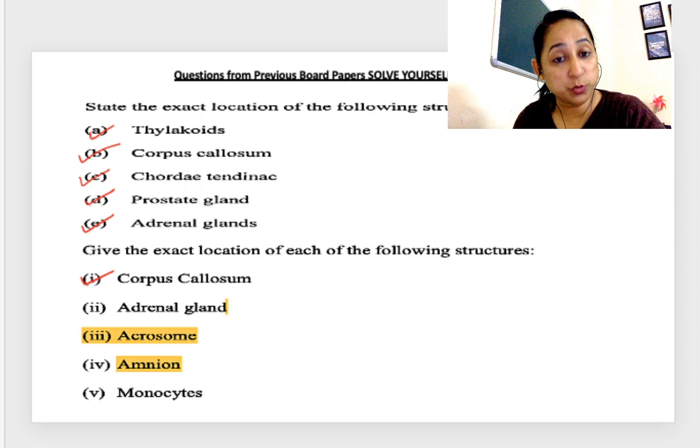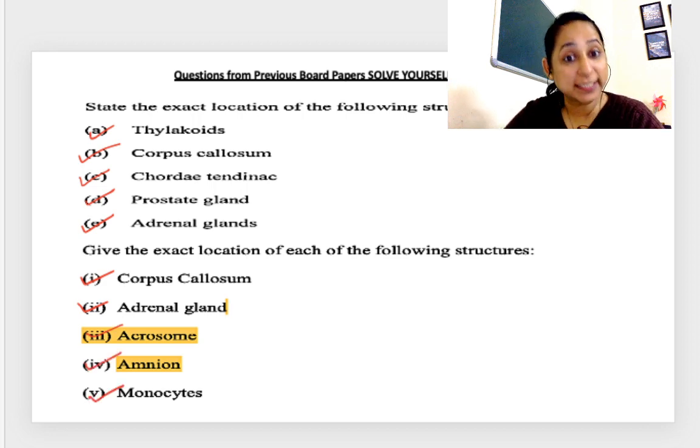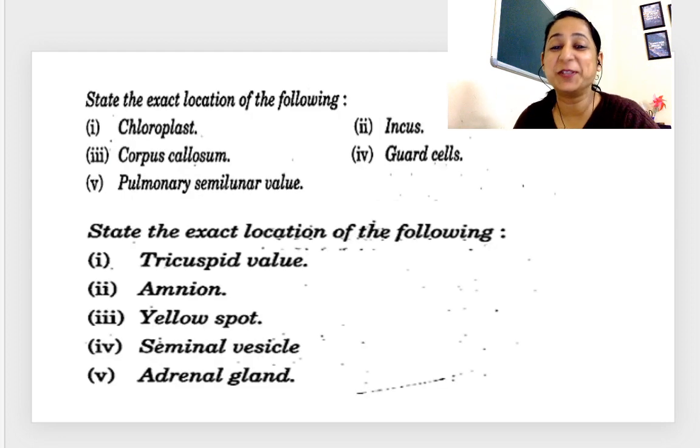State the exact location of the following structures: thylakoids we've already done, corpus callosum we've done, chordae tendineae we have not done, prostate gland we've done, adrenal gland we have done. Acrosome, on the sperms.